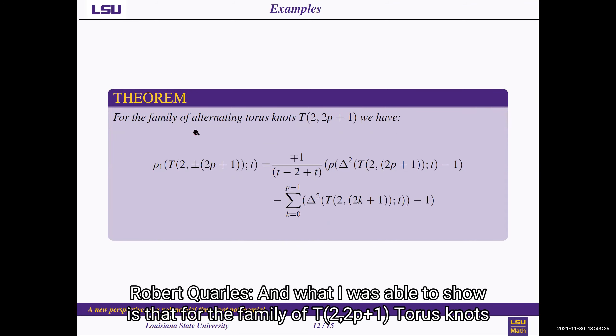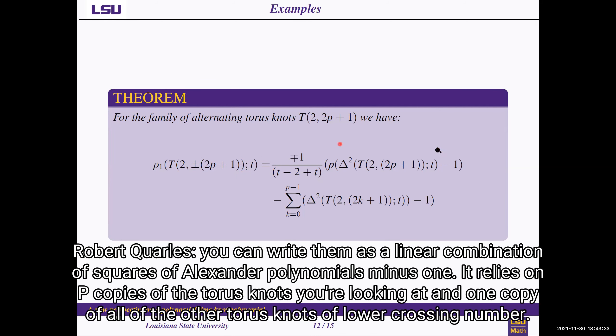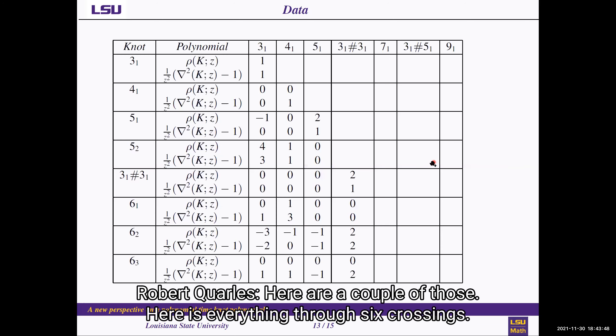And what I was able to show is that for the family of T(2, 2p+1) torus knots, you can write them as a linear combination of squares of Alexander polynomials minus one. It relies on p copies of the torus knot you were looking at, and one copy of all of the other torus knots of lower crossing number.